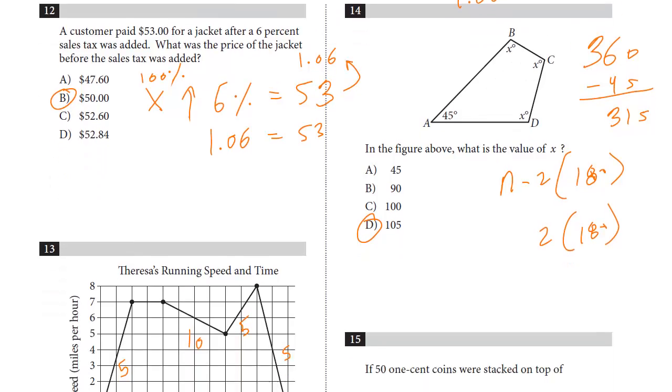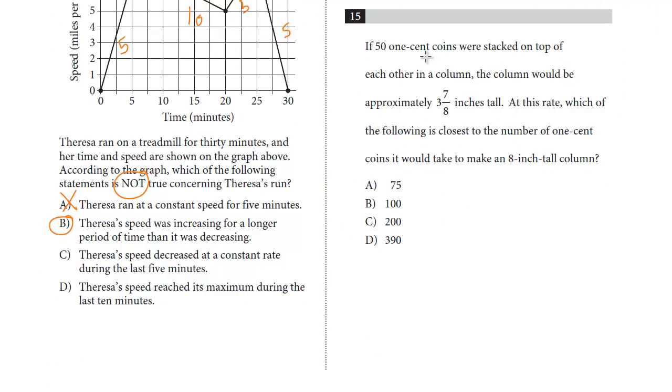We'll take a look at one last question on this page. It's number 15. If 50 one-cent coins were stacked on top of each other in a column, the column would be approximately 3 and 7/8 inches tall. At this rate, which is the closest number to the number of 1-cent coins it would take to make an 8-inch tall column? So this is just a ratio question. We've got 3 and 7/8. And it's helpful if you know how to convert certain fractions to decimals. 1/8 is 0.125, 7/8 is 0.875. So 3.875. And we're told that is equal to 50 coins. This is the height. This is the coins. And now we want to see, at this rate, the closest number of 1-cent coins to make an 8.